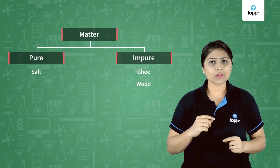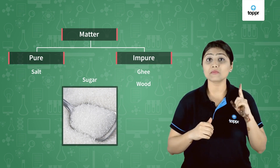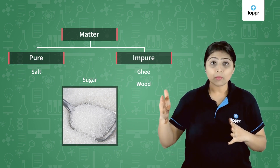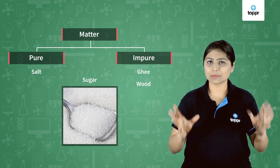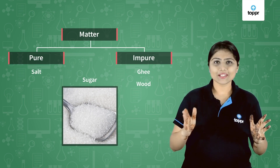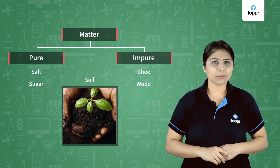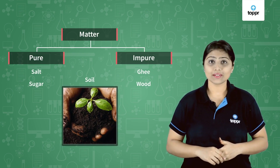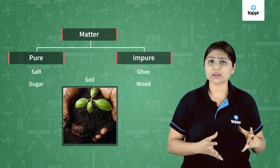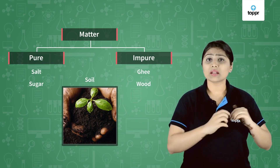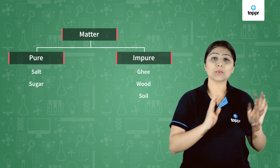Let's take the example of sugar. What is sugar made up of? It is just made up of one kind of particle with the same texture — dana dana egg samaan. So sugar is also pure. Let's take soil. Is soil a pure substance? No. It is made up of organic matter, air, water, grass, organisms, and so many things. That means soil is impure.